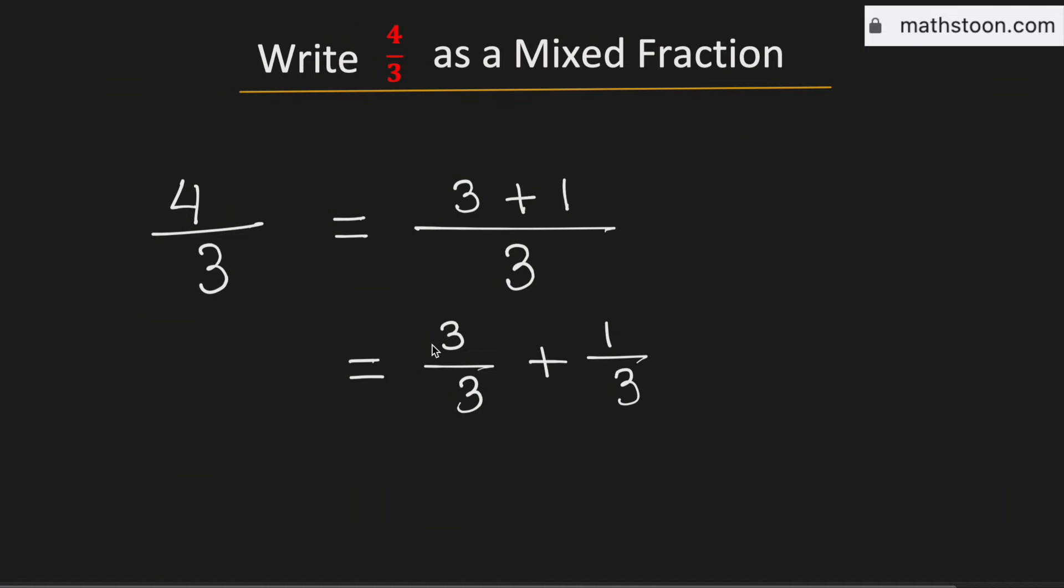We know that 3 over 3 is 1, and we have plus 1 over 3, which is the same as 1 and 1 over 3. So this is the desired mixed fraction, and this is our final answer.